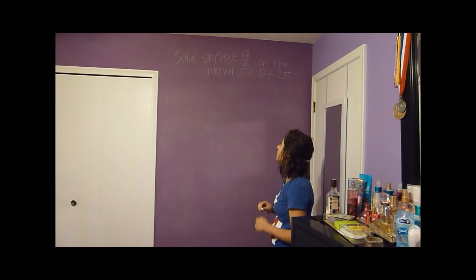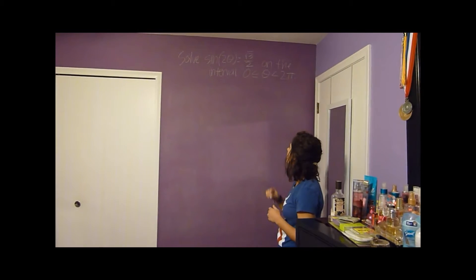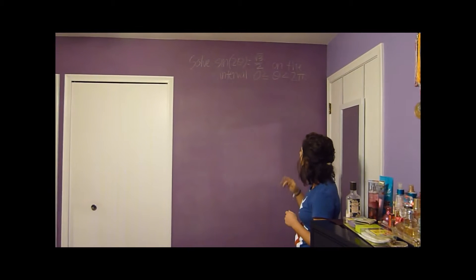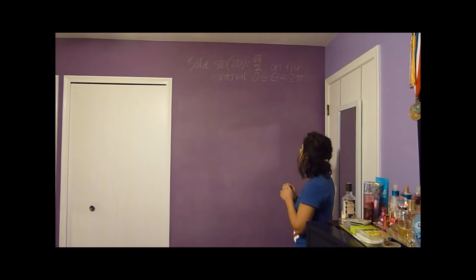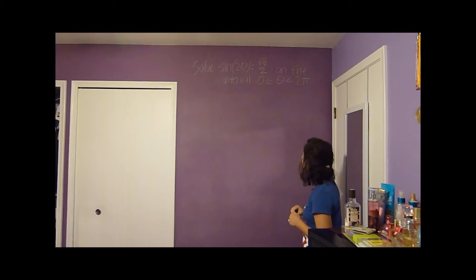So we're going to solve sine of 2 theta equals square root of 3 over 2 on the interval theta is greater than or equal to 0 and less than 2 pi.